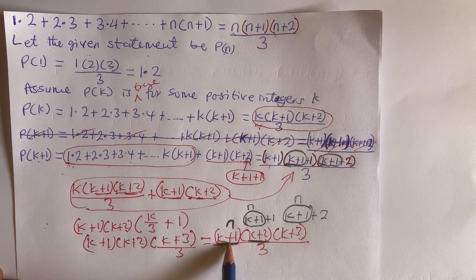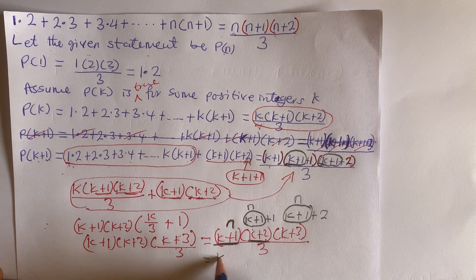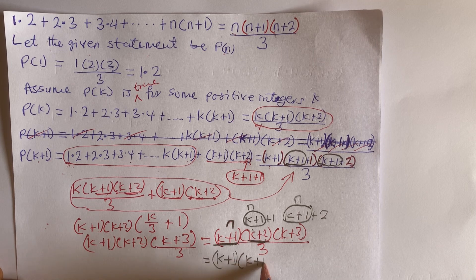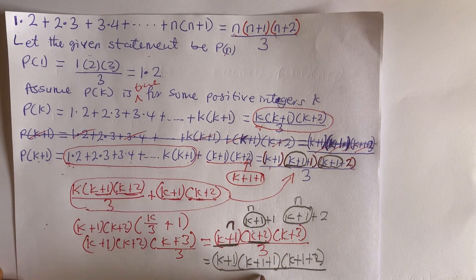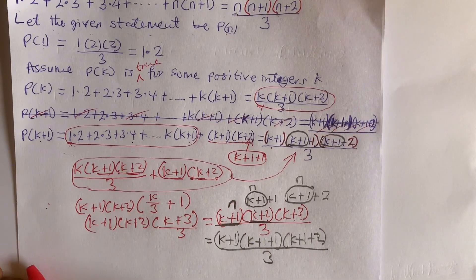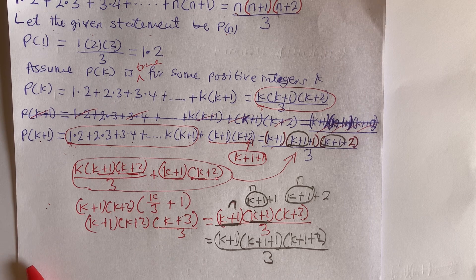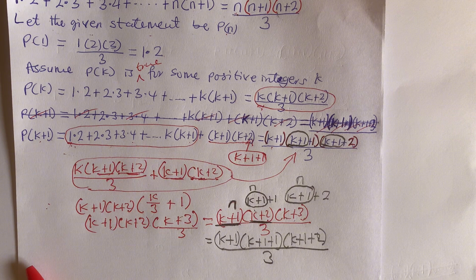Each n is replaced by k+1, giving us (k+1)(k+1+1)(k+1+2) divided by 3, which is exactly P(k+1). Therefore, by the principle of mathematical induction, P(n) is true for all n in the natural numbers. Thank you for watching — please like, share, subscribe and leave your comments.